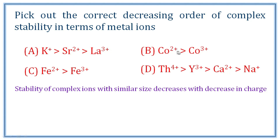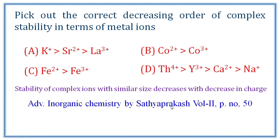The first listed order — K+, Sr2+, La3+ — is the reverse of correct stability, so it is wrong. Again, 2+ is less stable than 3+, so cobalt 3+ is more stable. Fe2+ being more stable than Fe3+ is also wrong — that is reverse order. The correct order is Th4+, Fe3+, Ca2+, Na+, all of similar size. The stability of complex ions with similar size decreases with decreasing charge, so option D is the correct answer.